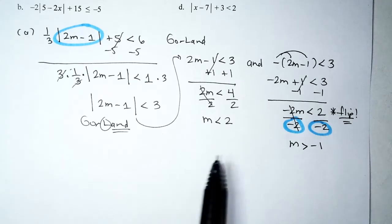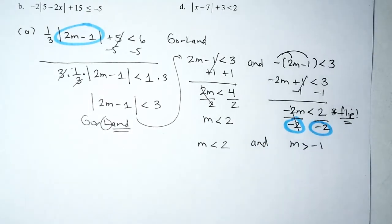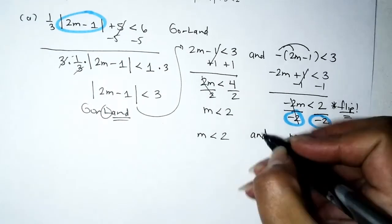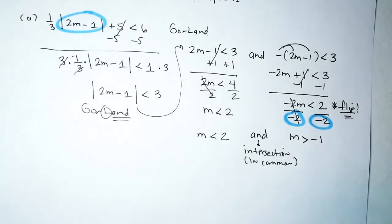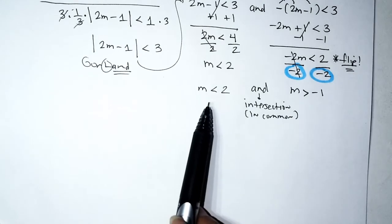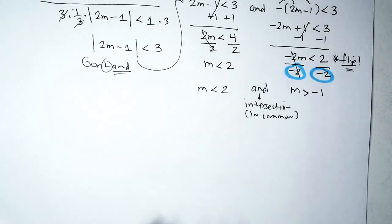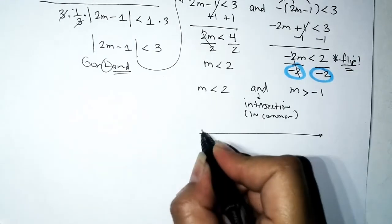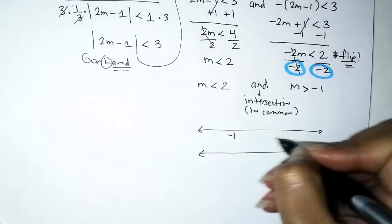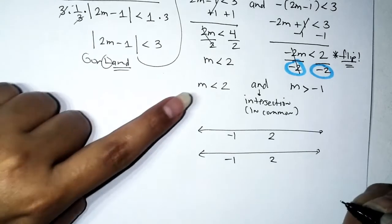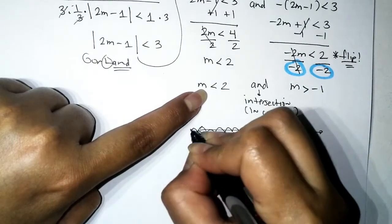We have an AND compound inequality, so we need the intersection. I'll graph both inequalities to make it clear. The endpoints are 2 and −1, where −1 is smaller. First inequality, m < 2: open circle at 2, pull to the left. Second inequality, m > −1: open circle at −1, pull to the right.